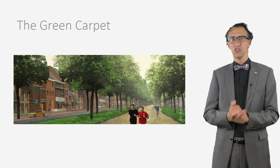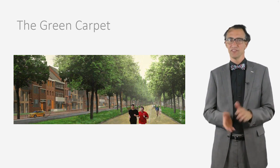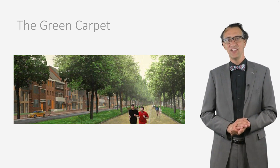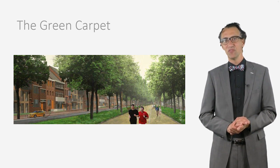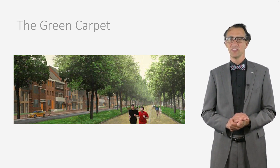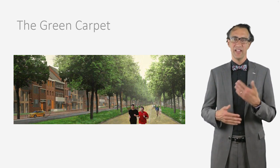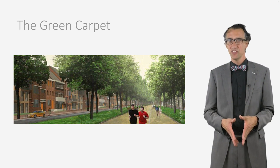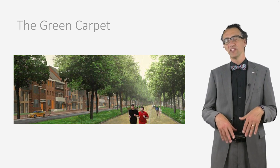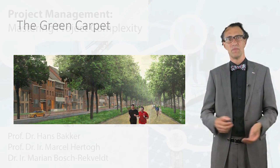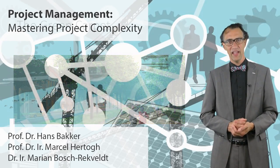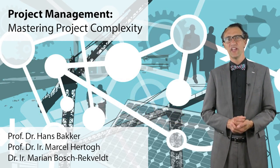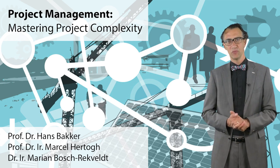To conclude our case of the A2 Maastricht green carpet, you see that dynamics in society gave room to reframe the project and to add extra scope. Rather than reducing complexity, in fact this project's complexity was enlarged. Reframing and adding of scope created extra value and made the broader city development project feasible by gaining sufficient political and societal support.